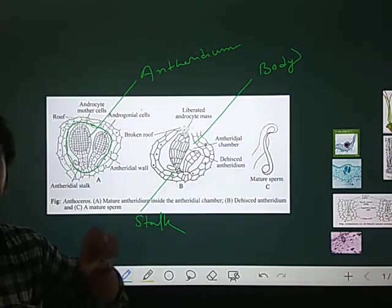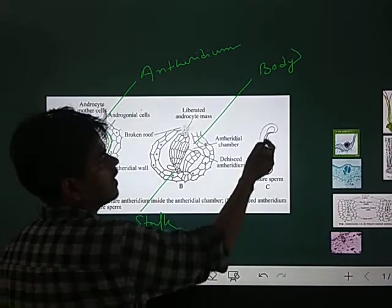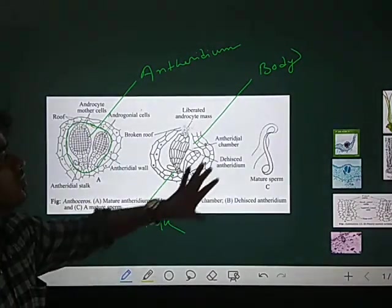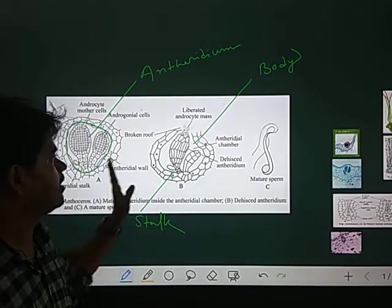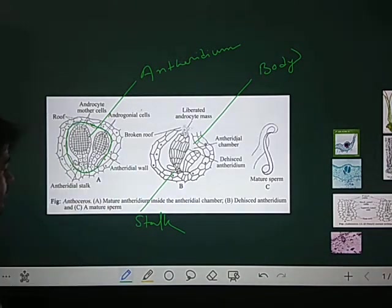The antherozoid is an elongated, slightly spiral structure with two flagella. So that's all about the antheridia and its product, the antherozoid.